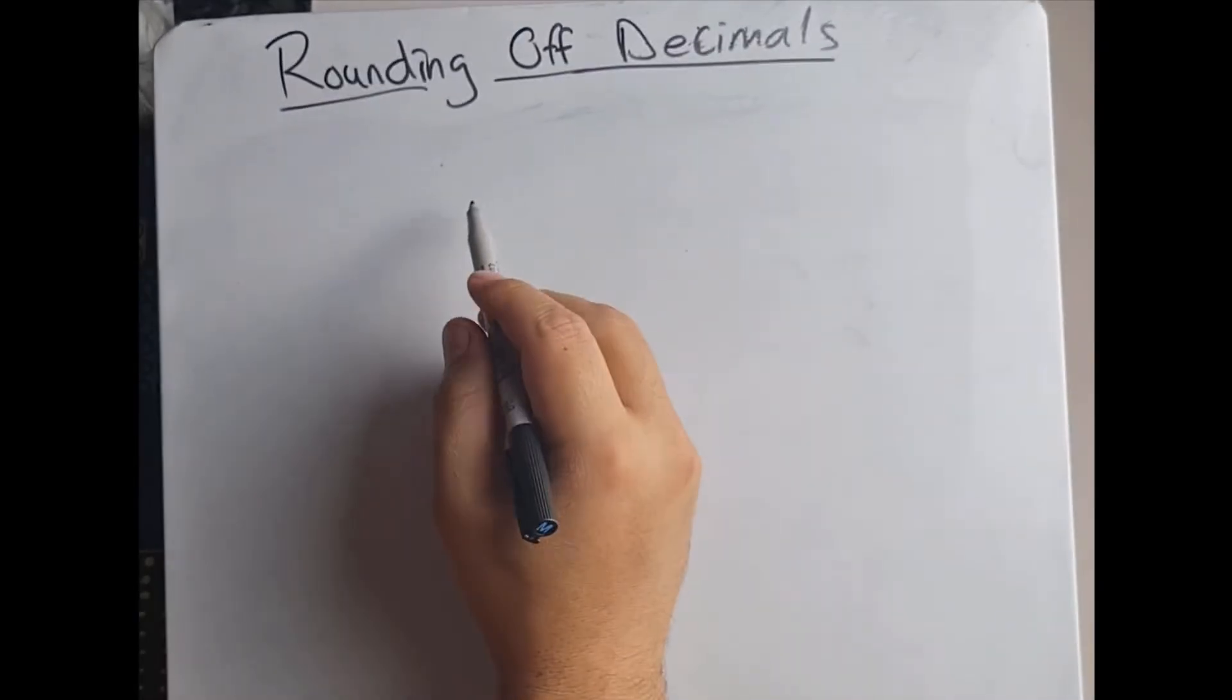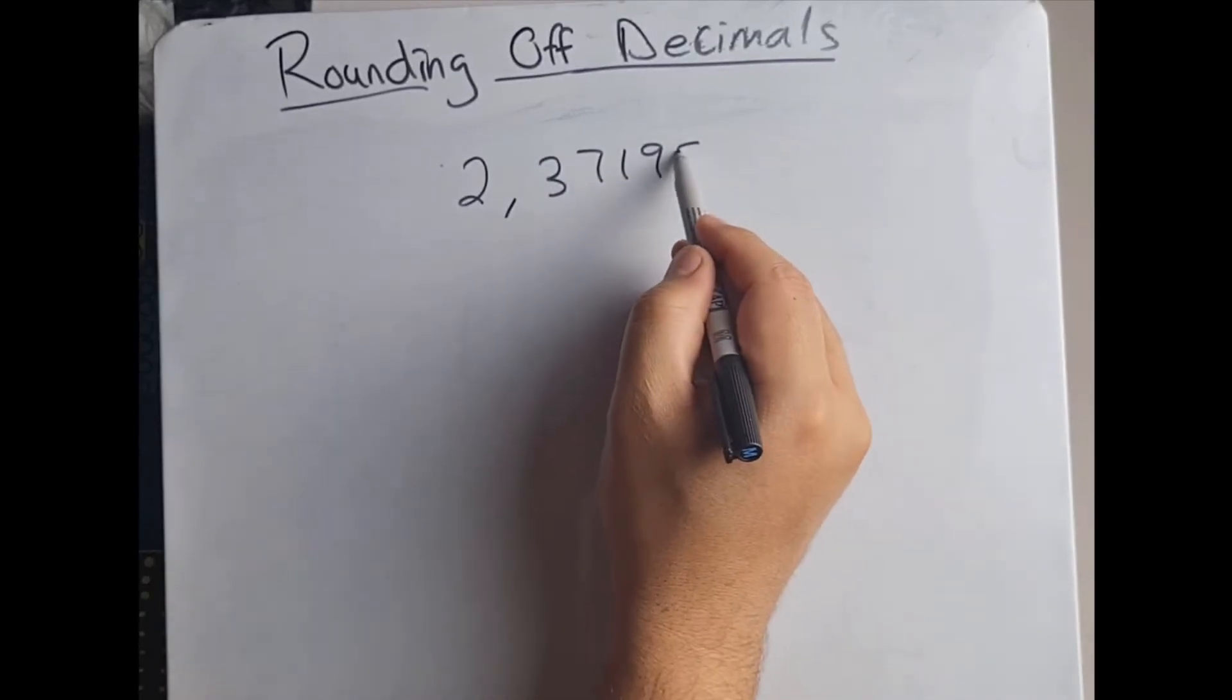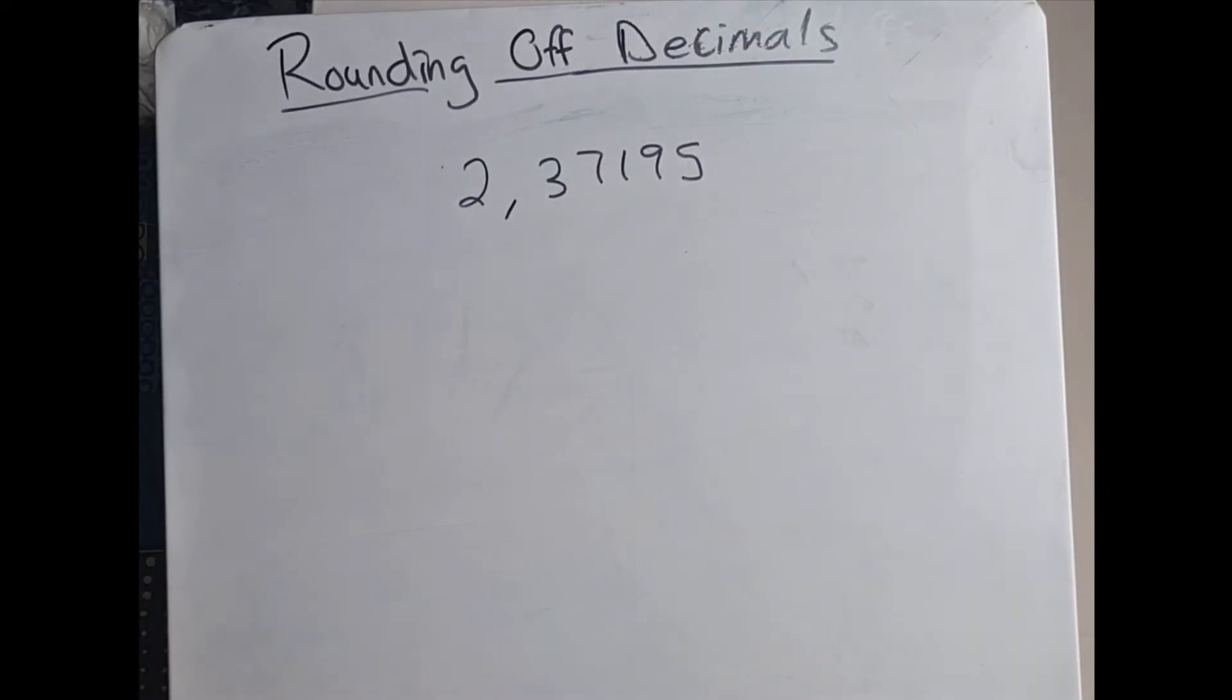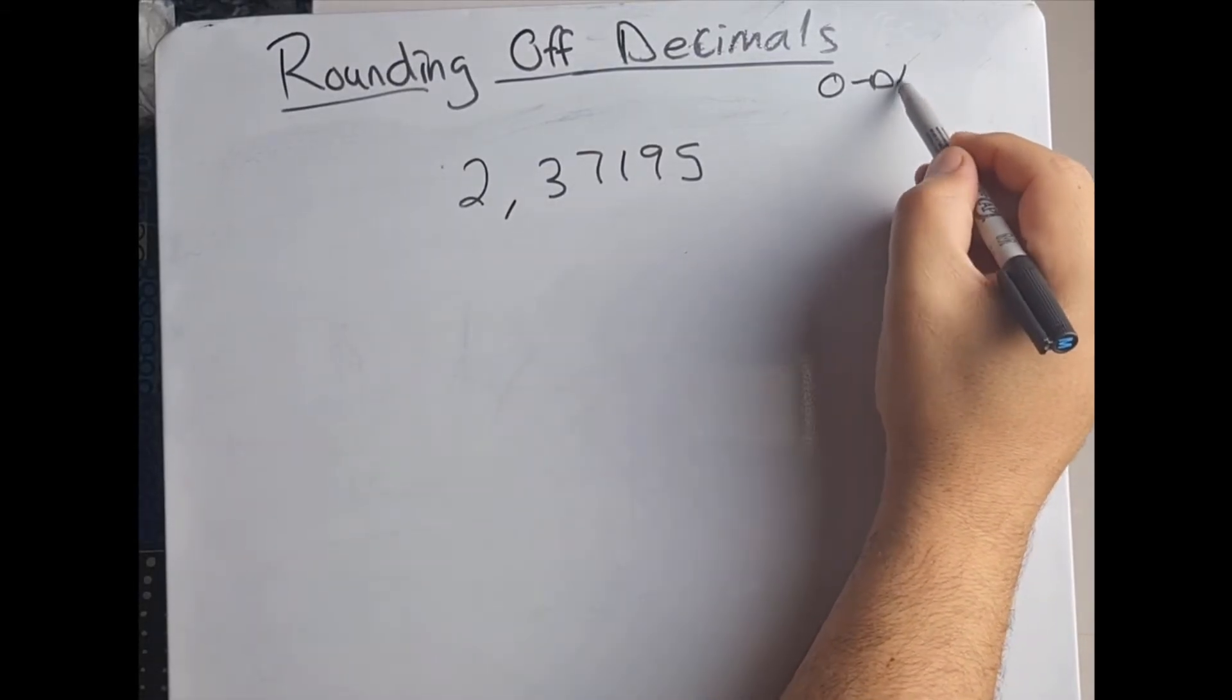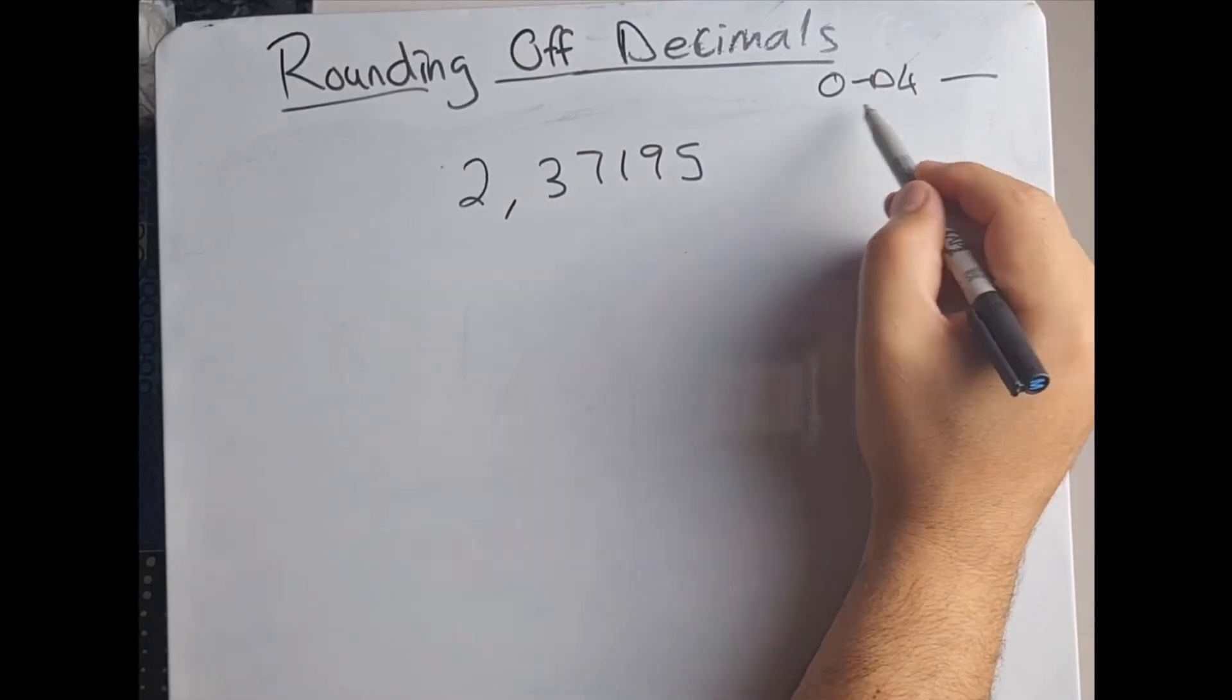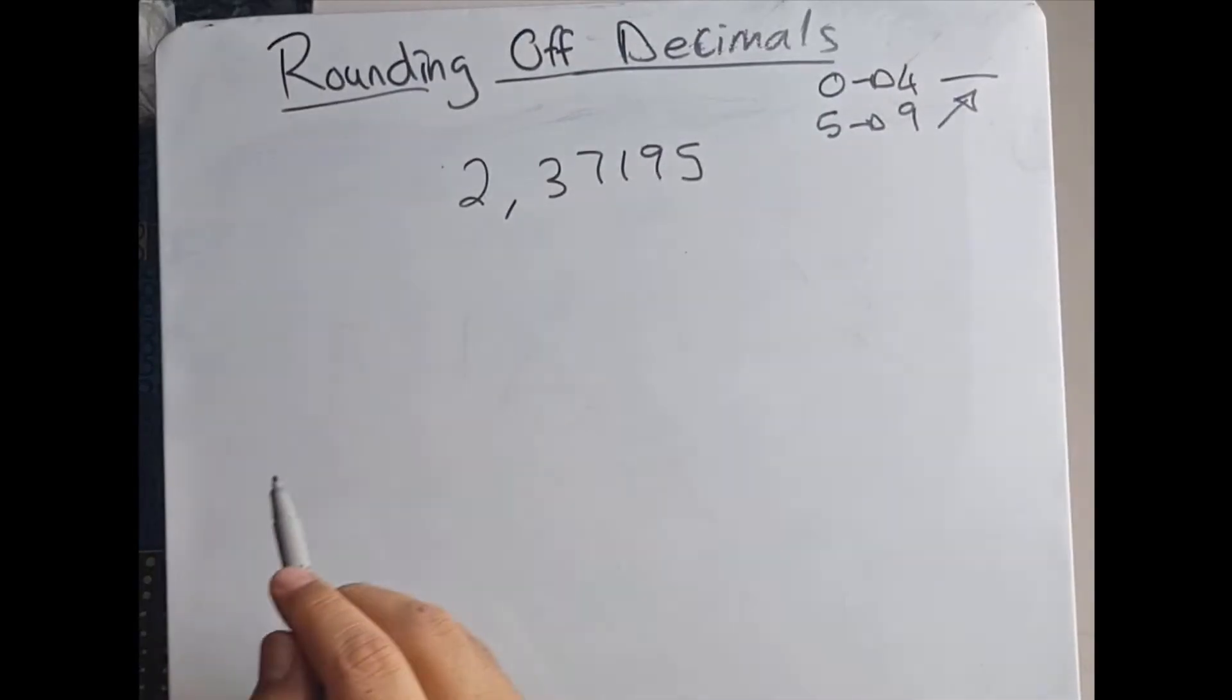If we have a number like 2.37195, now usually when you round off with decimals, the rules are going to be very similar. You're still going to look at the next door neighbor on the right to determine whether the rounding value stays the same or goes up. So we still abide by the rules: 0 to 4 it remains the same, however 5 to 9 it's going to go up.